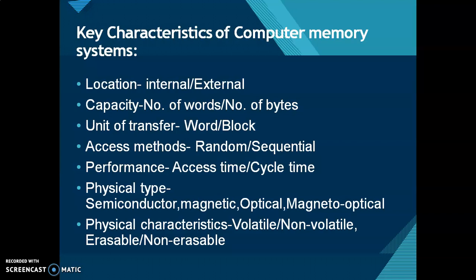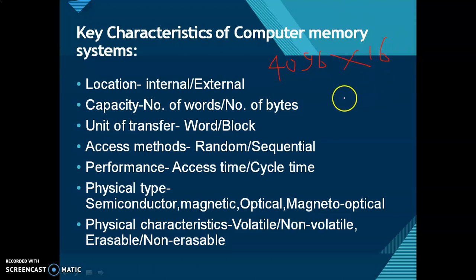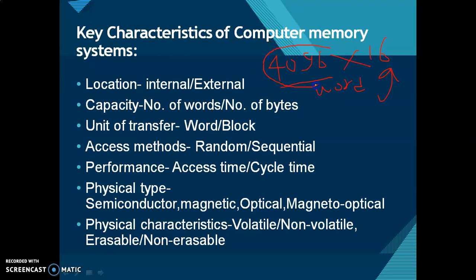The second characteristic is capacity. The capacity of a memory unit can be described by number of words and by number of bytes. For example, if a memory configuration is given as 4096 × 16, it means there are 4096 words and each word has a size of 16 bits.